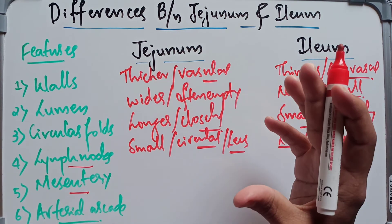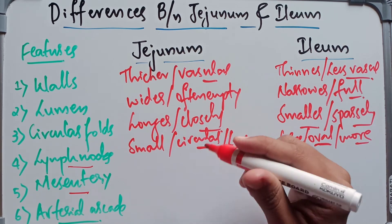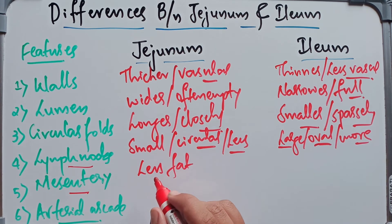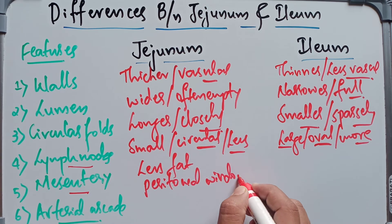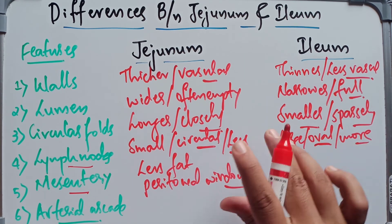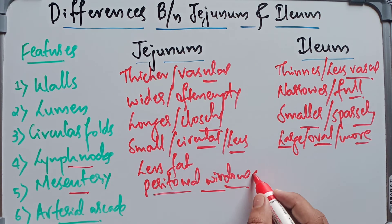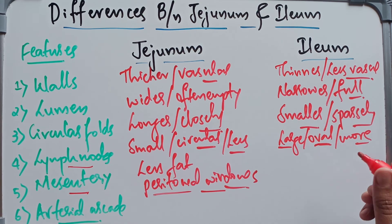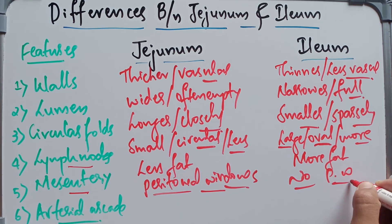Coming to the mesentery: in the jejunum it contains less fat, and there are semi-translucent areas between the vasa recta called peritoneal windows. These peritoneal windows are present in the jejunum. In the ileum, the mesentery contains more fat and there are no peritoneal windows.